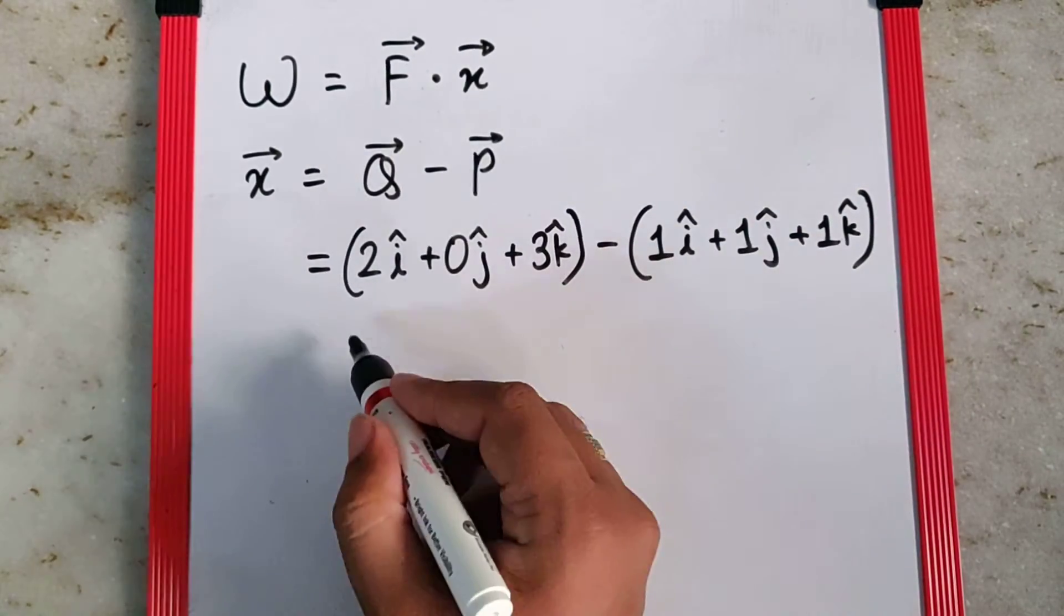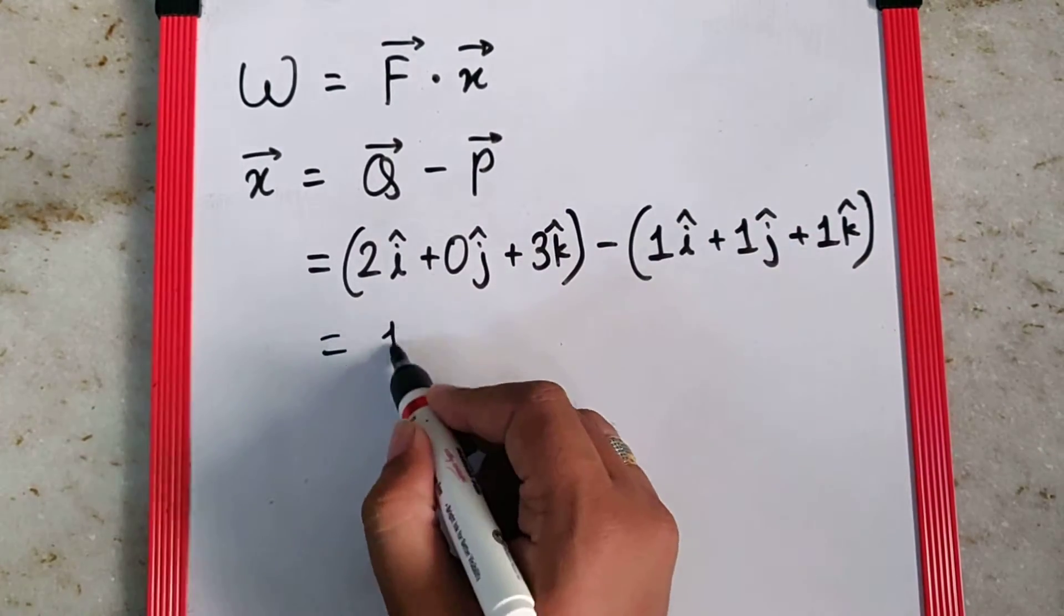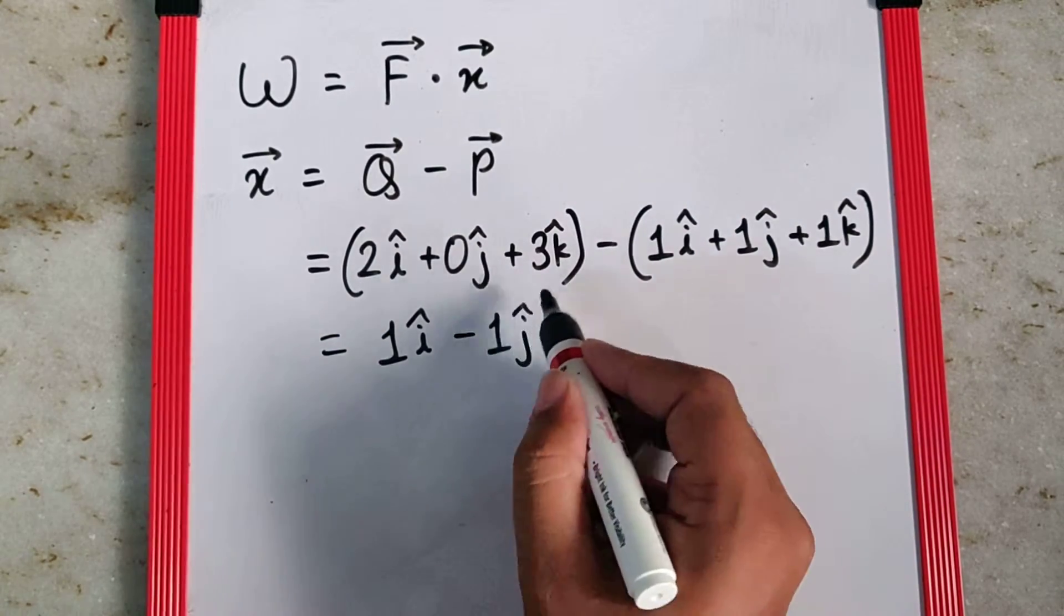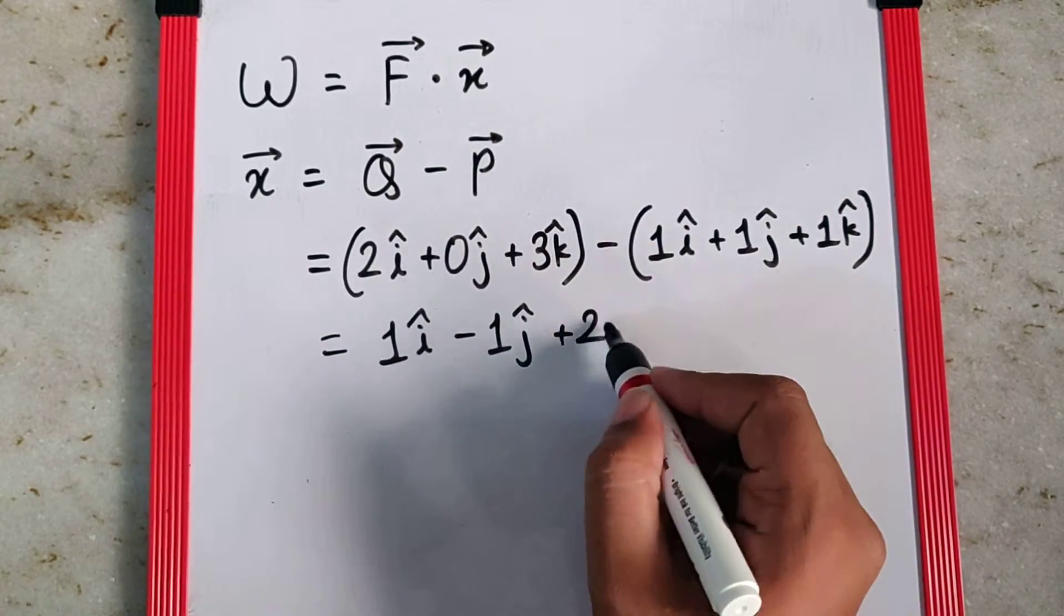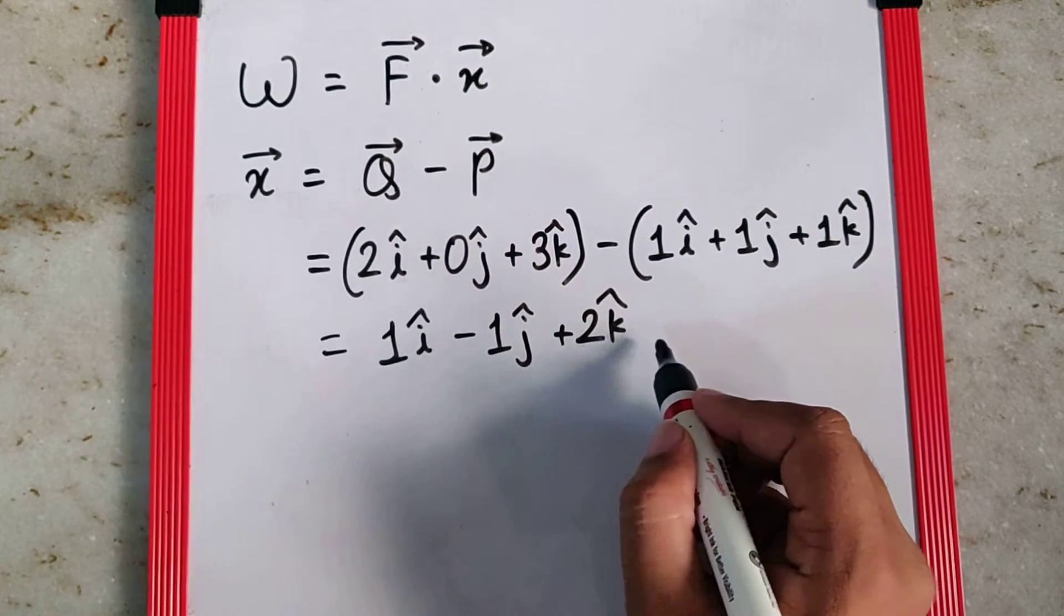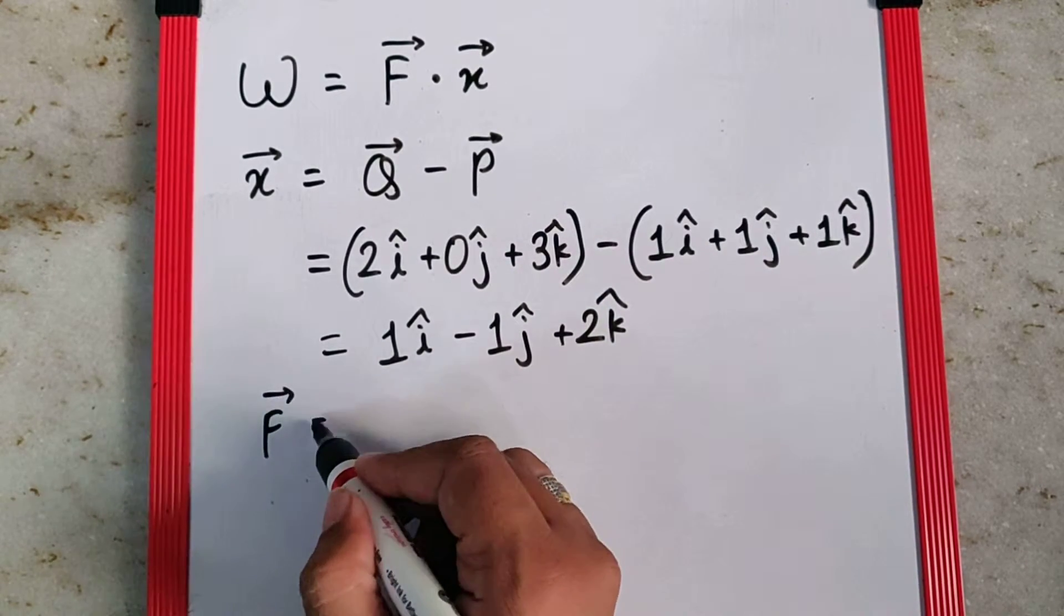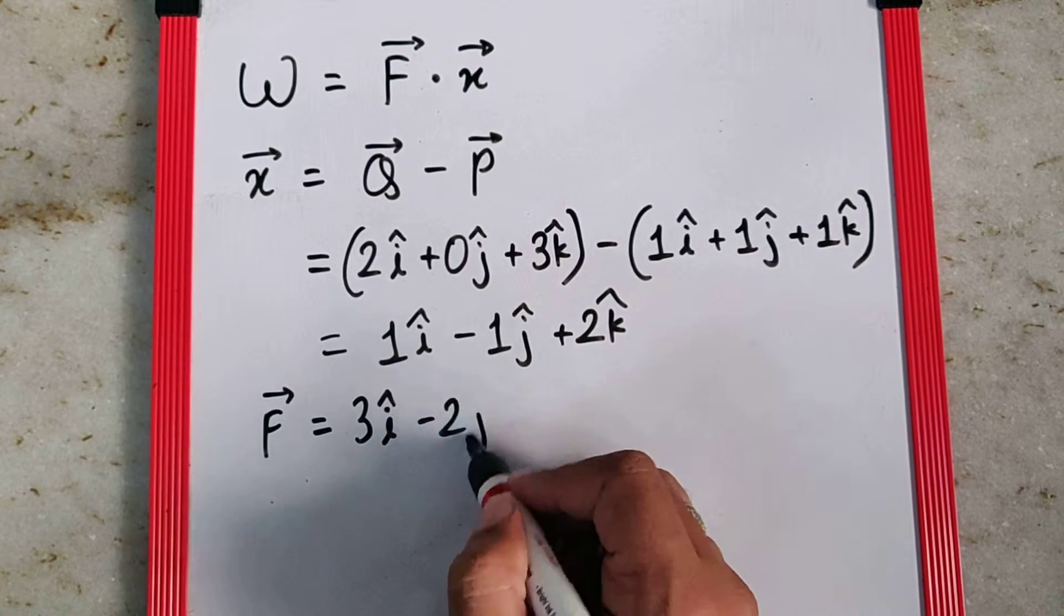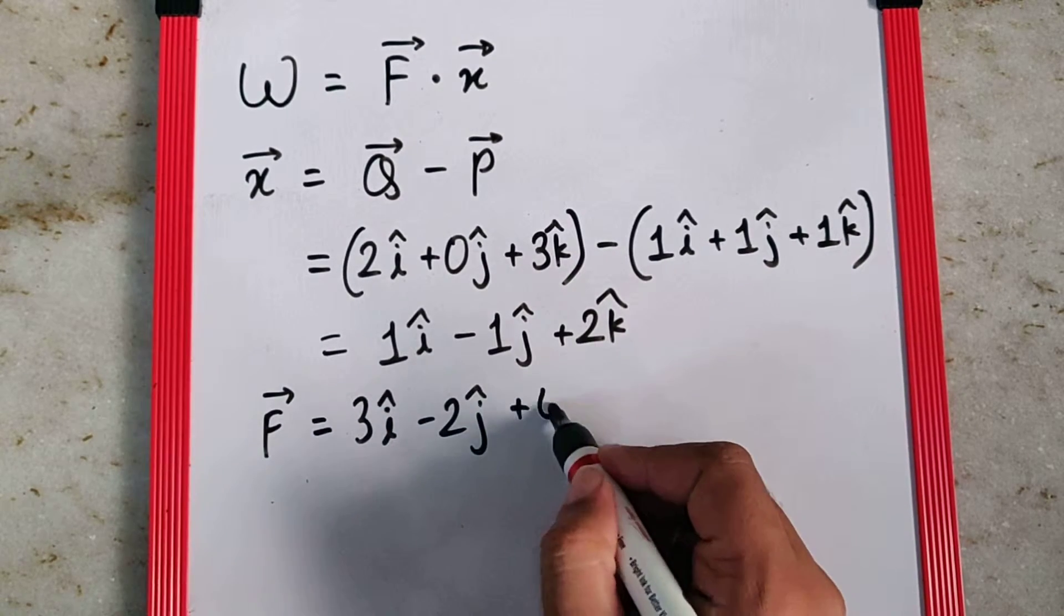When you subtract these two, you get 2 minus 1 as 1i cap, 0 minus 1 as minus 1j cap, and 3 minus 1 as plus 2k cap. This becomes the displacement. Force is already given as 3i cap minus 2j cap plus 4k cap.